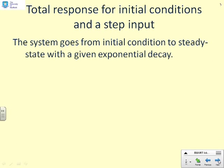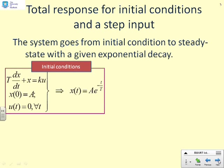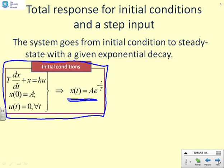The system goes from an initial condition to a steady state with a given exponential decay. This box shows you what was covered in lecture one. If you have non-zero initial conditions but a zero input, how does the system behave? You remember we got this behavior: x(t) equals a e to the minus time over capital T, where a was the initial condition, capital T the time constant.